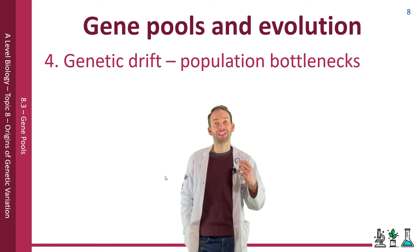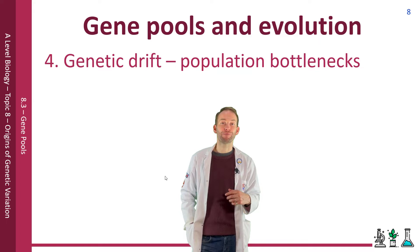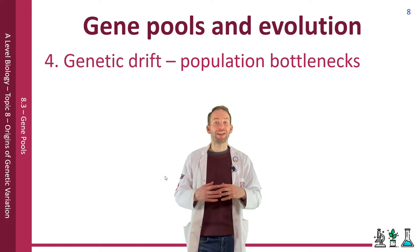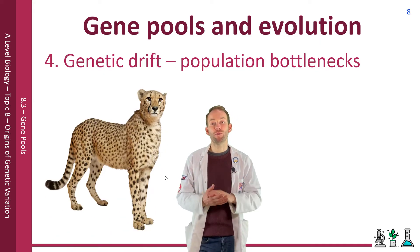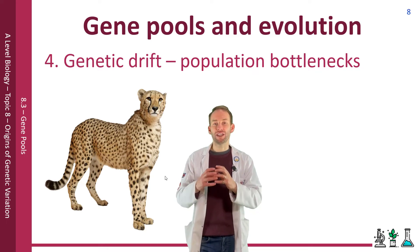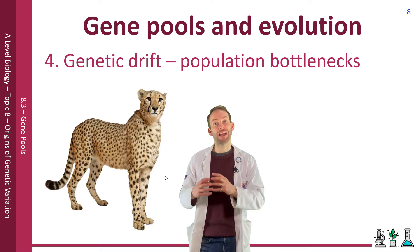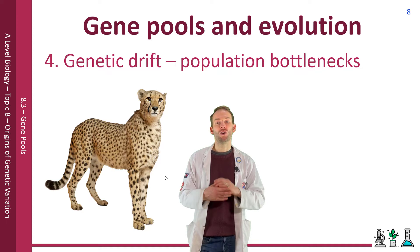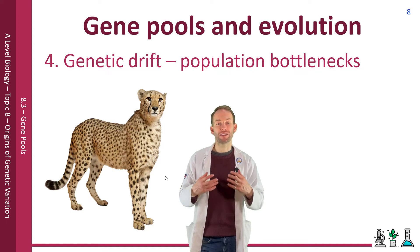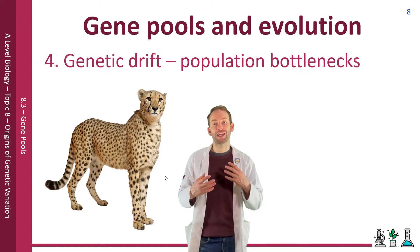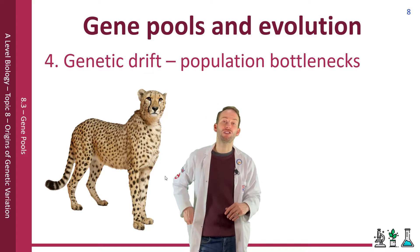As the population re-establishes itself, it will have a very different allele frequency from the original population, and it could even become an entirely new species. An example of this is cheetahs. At the end of the last ice age, cheetahs almost became extinct. Although population numbers recovered, their genetic diversity has remained very low because they are all descended from the ancestral population bottleneck. All cheetahs have about 99% of their alleles in common, and as a result they are vulnerable to environmental change.